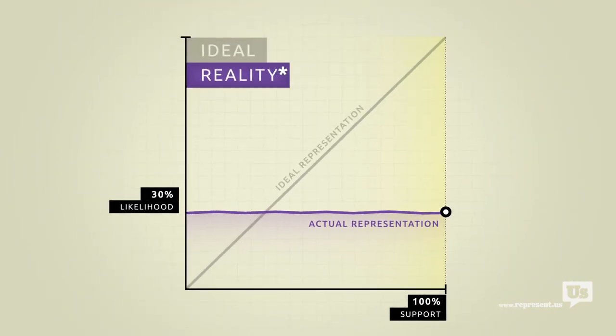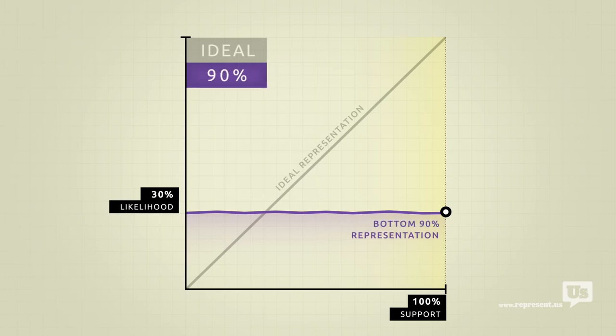But there's a catch. This flat line only accounts for the bottom 90% of income earners in America. Economic elites, business interests, people who can afford lobbyists, they get their own line.